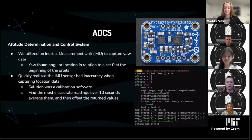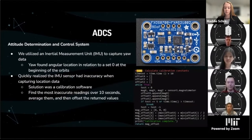Next for software, we have the ADCS — the Attitude Determination and Control System. We utilized an inertial measurement unit, the IMU, to capture yaw data. The yaw found the angular location of the CubeSat in relationship to a set zero established at the beginning of the orbit. We quickly realized that the IMU sensor had some inaccuracy when capturing the location data. Our solution was calibration software that finds the most inaccurate readings of the magnetometer over 10 seconds, averages them, and then returns an offset.